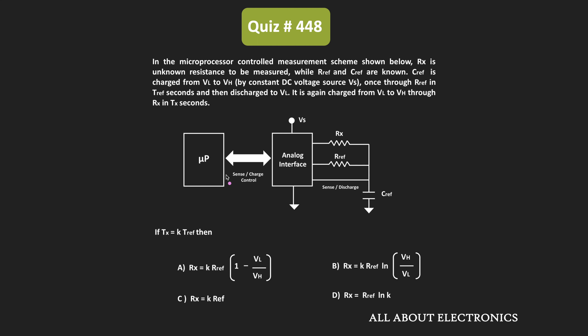The microprocessor also measures the time required for charging the circuit from VL to VH. For the first cycle, the circuit is charged from VL to VH through the R_reference resistor, and the charging time is equal to T_reference. After that, the capacitor is discharged. During the second cycle, the charging time from VL to VH is equal to Tx. After measuring the two times, we know that Tx is equal to K times T_reference. From this, we are asked to find the relationship between Rx and R_reference.